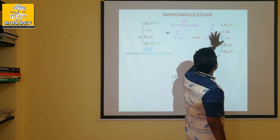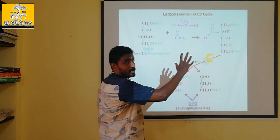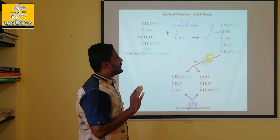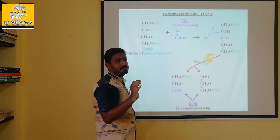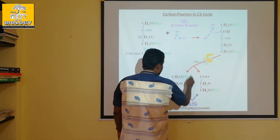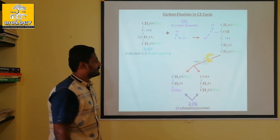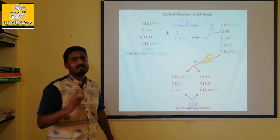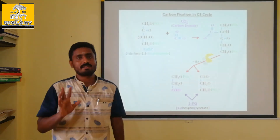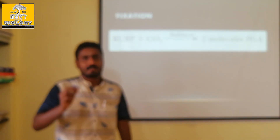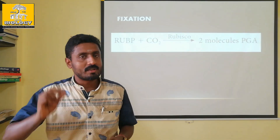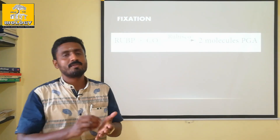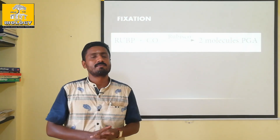In this process, the C5 compound RuBP combines with CO2 to form a 6-carbon intermediate which immediately splits into two molecules of 3-Phosphoglyceric Acid (3-PGA). This is the fixation step — carbon from the atmosphere is fixed into the plant via 3-PGA in the stroma.